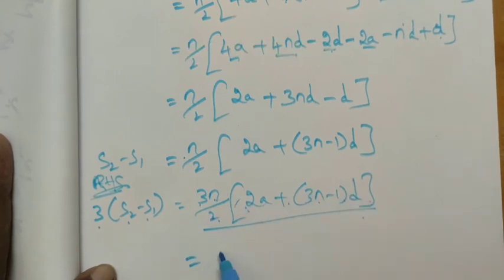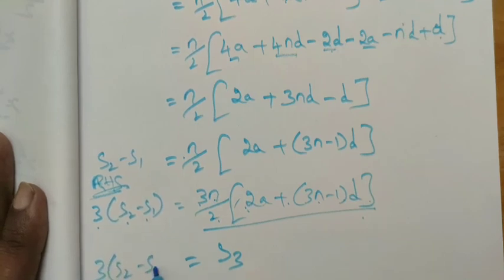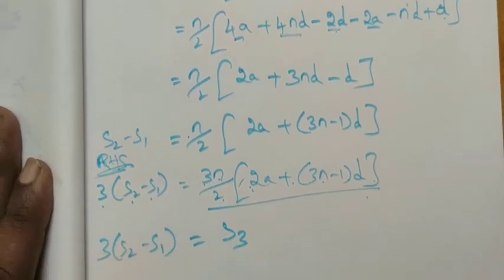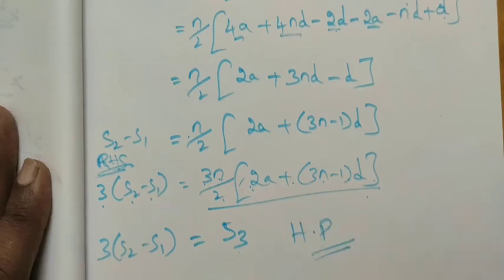S₃ in left side. So S₂ minus S₁, 3 times of S₂ minus S₁ is equal to S₃. We have proved it. Thank you students.